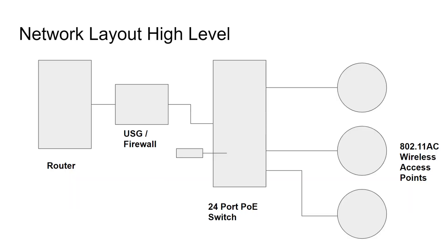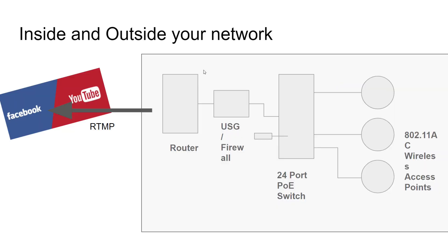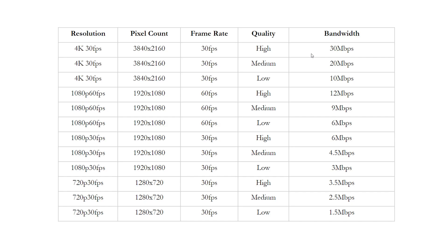Now let's look at a local area network. This is the network your computer is connected to in order to get internet access from your internet service provider. You have your router, which is given to you by your ISP — maybe that's AT&T, Verizon, or Comcast — and it connects to their network to give you internet access. You might also have a firewall, a network switch, and Wi-Fi access points. Your local area network is different from the wide area network, which is what we use RTMP — Real Time Media Protocol — to stream to YouTube and Facebook out to a content delivery network that delivers our live streams to our audiences.